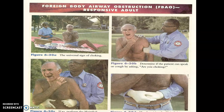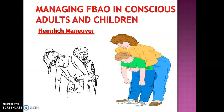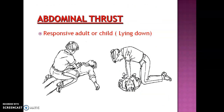When you see an adult responsive victim with hands on their throat — they are responding, communicating that they are choking — you need to manage FBAO in conscious adults and children. The most important method is to bring the victim into position, place one hand in the abdominal region and the other hand on top, and press. This method is called the Heimlich maneuver — abdominal thrust. It helps to dislodge the choking obstruction.